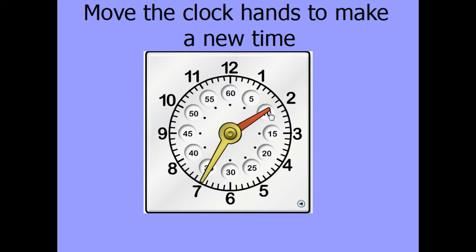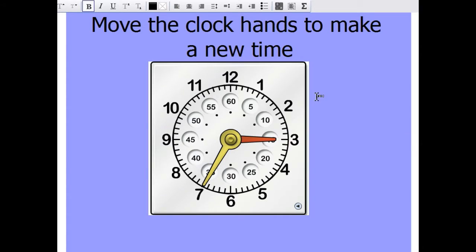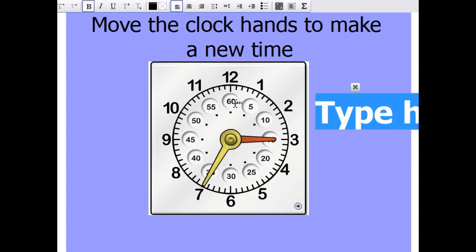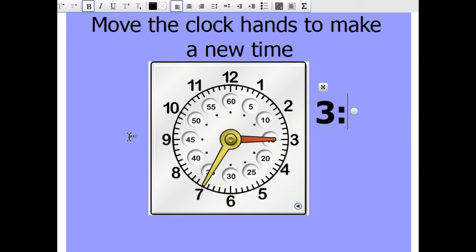So let's go ahead and read this time. The hour hand is pointing to three, so that would be three. After the hour, we use what is called a colon, which helps separate the hour and the minutes. So we have three, and then if we count by fives from twelve — zero, five, ten, fifteen, twenty, twenty-five, thirty, thirty-five where seven is — so the answer should be three thirty-five.